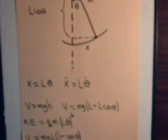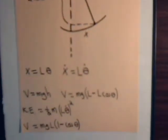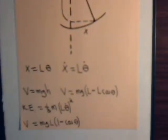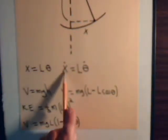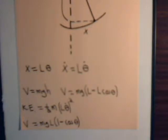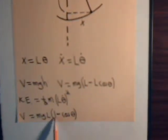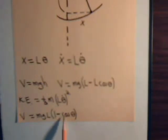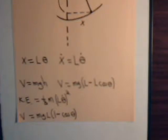The kinetic energy is one-half M v-squared, or one-half M x-dot-squared. The potential energy is MgL times the quantity one minus the cosine of theta.